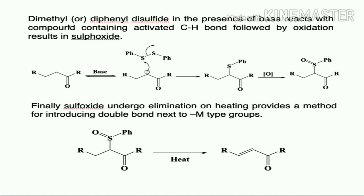Regarding reactions of disulfides: dimethyl or diphenyl disulfides, in the presence of a base, react with a compound containing an activated C–H bond to form a sulfur-containing adduct. Treating an activated methylene group with base generates an anion, which reacts with diphenyl or dimethyl disulfide via substitution to form the sulfur-containing adduct. This adduct then undergoes oxidation to form a sulfoxide derivative.